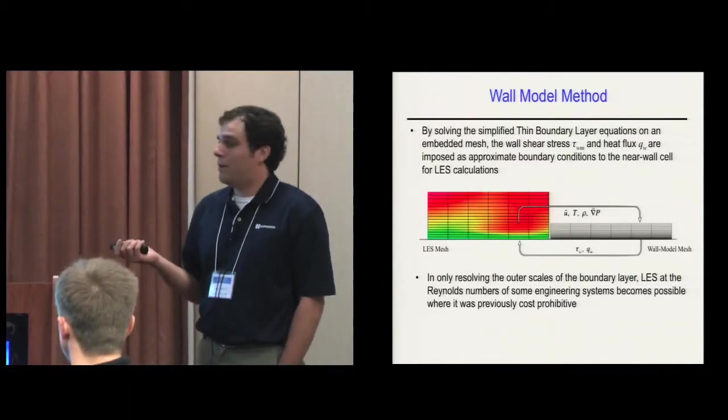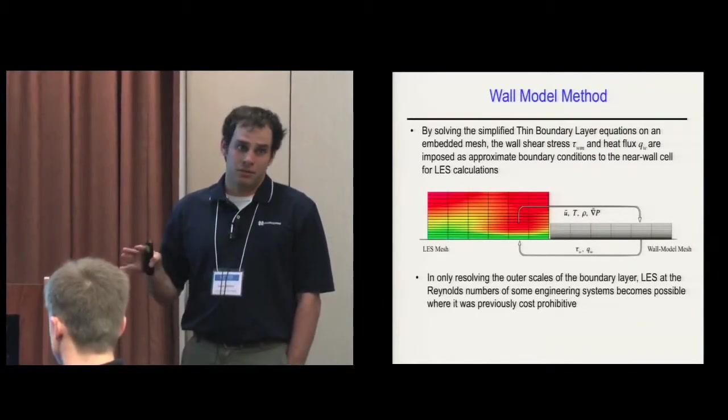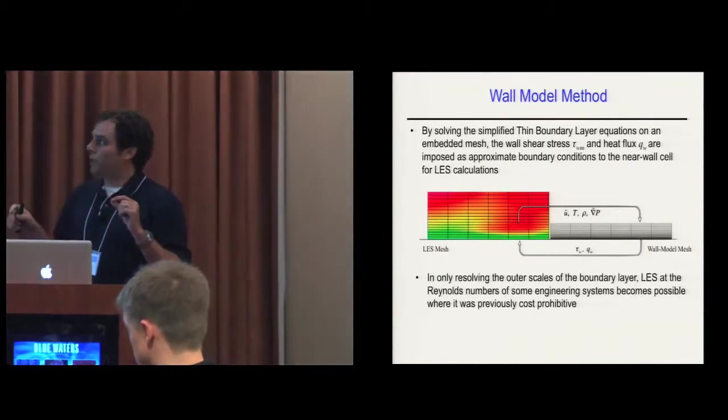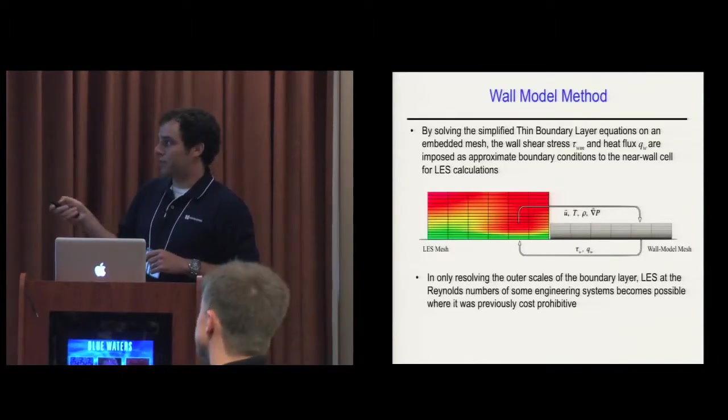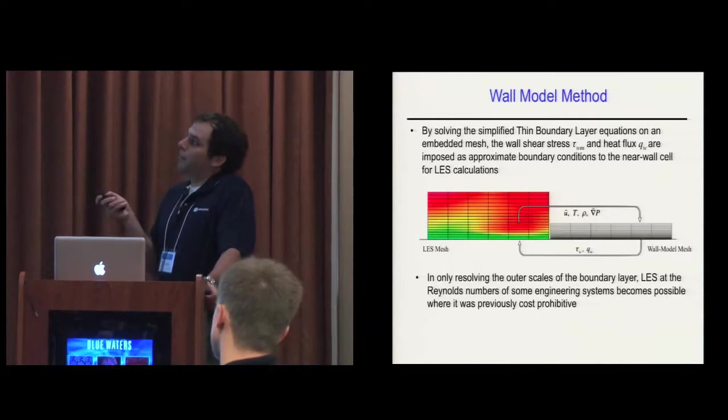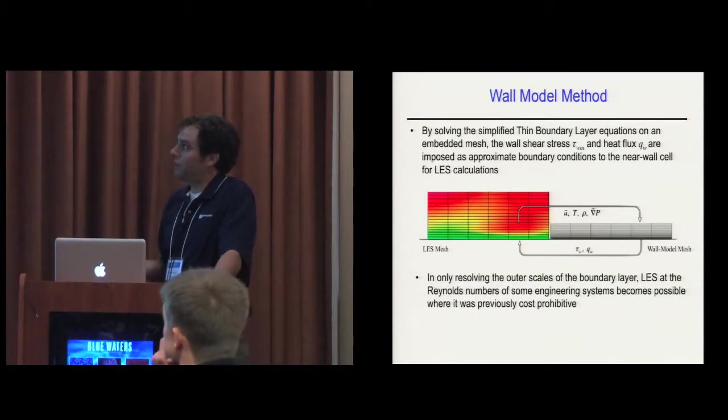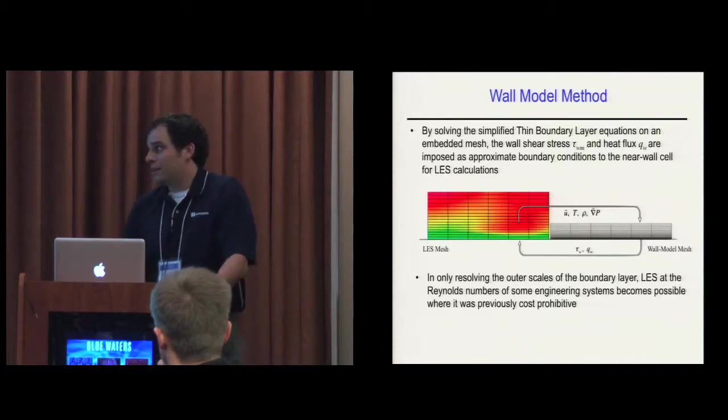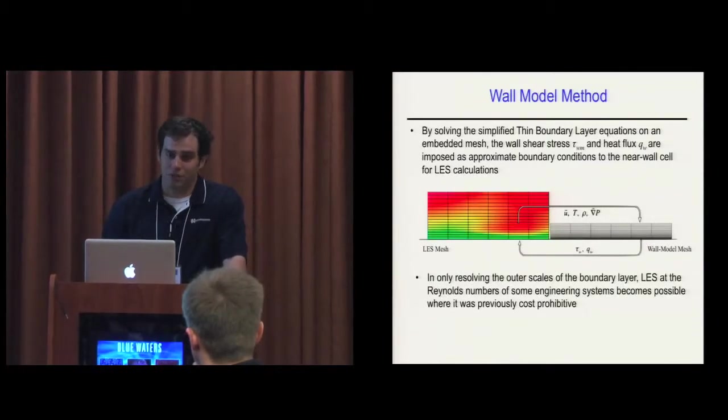A wall model solves a simplified version of Navier-Stokes equations called thin boundary layer equations on an embedded mesh. In the LES mesh in the outer part, we don't have the resolution to get the inner scales of the wall, but we employ a separate mesh that does have the resolution. The LES mesh provides outer boundary conditions, and the simplified thin boundary layer equations solve in there and return as boundary conditions.